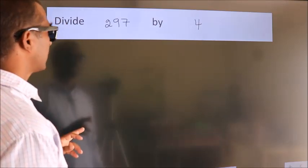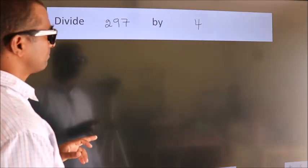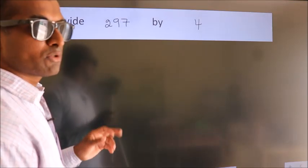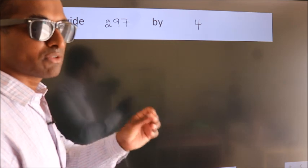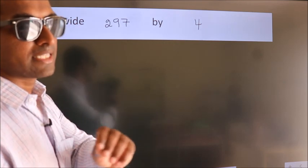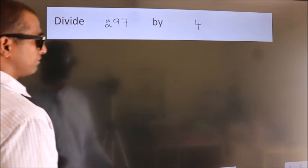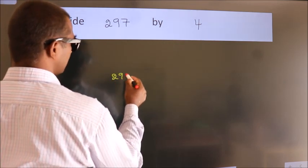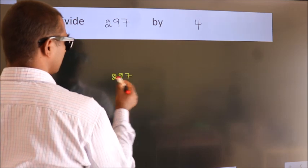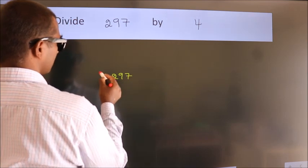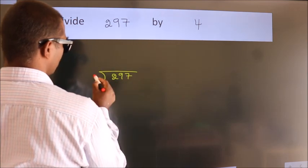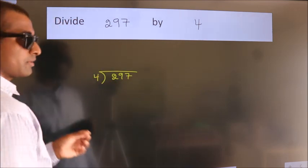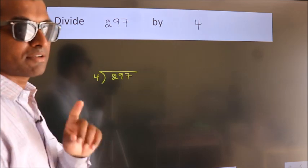Divide 297 by 4. To do this division, we should frame it in this way: 297 here, 4 here. This is your step 1.